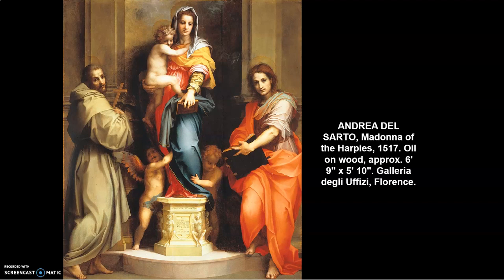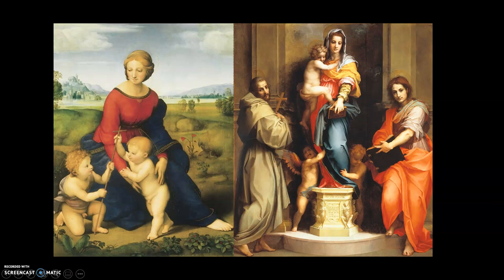A great place to begin the comparison would be to take a quick look at Raphael. In this piece, on the left is the Madonna of the Meadow, which is roughly contemporary, maybe about 10 years earlier. The values that Raphael tended to promote, especially in these early paintings, are of stability and an overall sense of grace — a sense of almost normality to the scene.